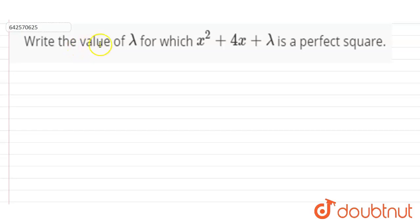So the question is: write the value of λ for which x² + 4x + λ is a perfect square. The given equation is x² + 4x + λ.